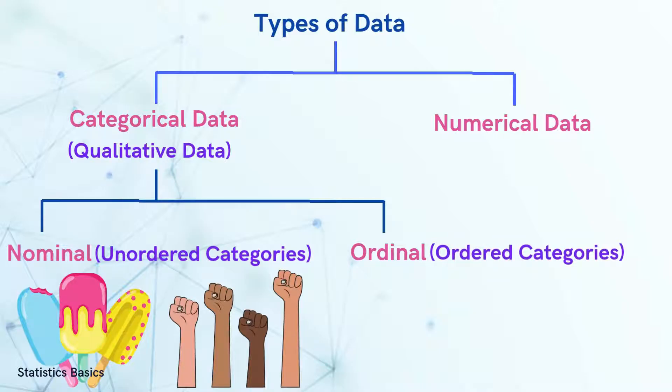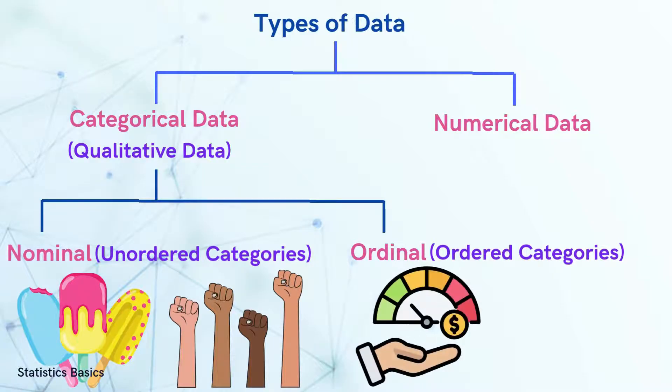On the other hand, ordinal data can be ranked or ordered. This means that categories within ordinal data have a natural or logical sequence. For instance, income levels can be ordered from low to high, or customer feedback ratings can be ordered from very poor to excellent.